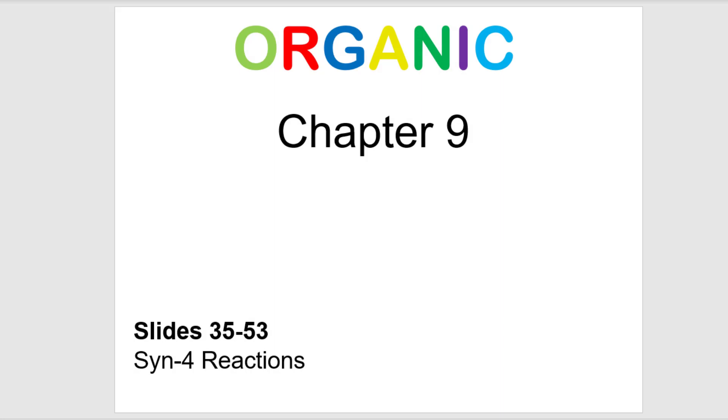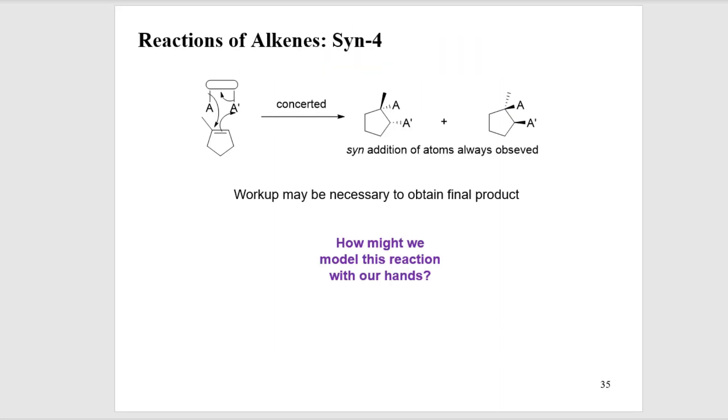Chapter 9, slides 35 to 53. The last mechanistic motif we're going to cover in this chapter for the reactions of alkenes is syn-4. This is very similar to syn-3 except we're going to be adding two atoms across the pi system.